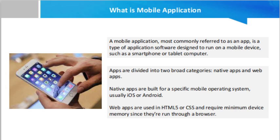For example, apps that use location-based features are inherently built from the ground up with an eye to mobile, given that the user is not tied to a location as on a PC. Apps are divided into two broad categories: native apps and web apps.